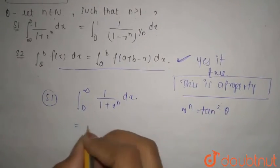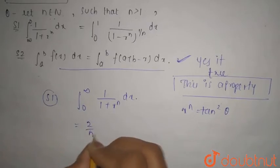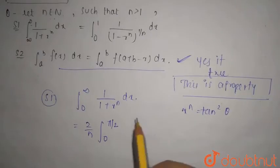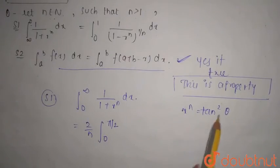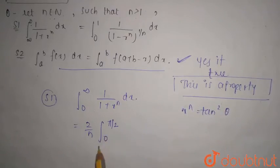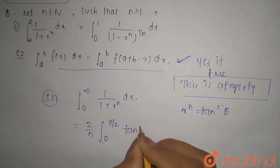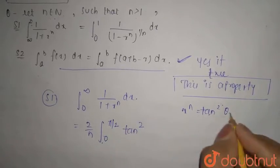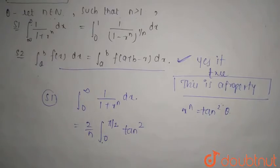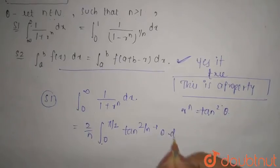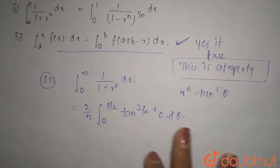So you can take this as 2 by n integration 0 to pi by 2. When you put x as this, that is x to the power n is equal to tan square theta, then the limit will change. And you have tan square theta minus 2 by n minus 1 theta d theta.